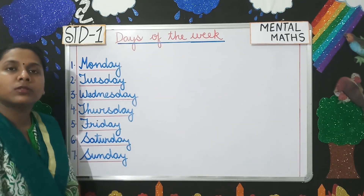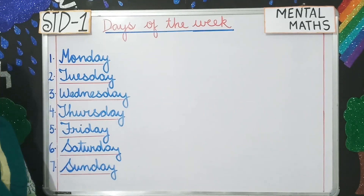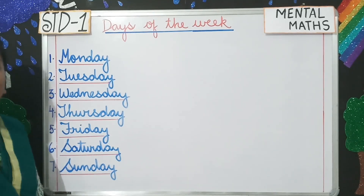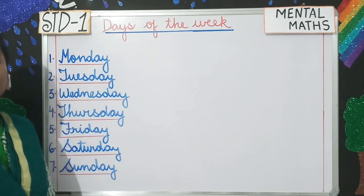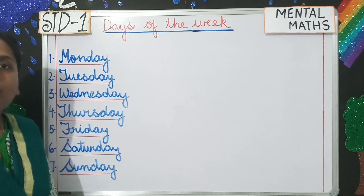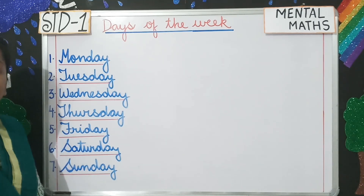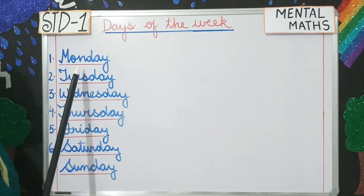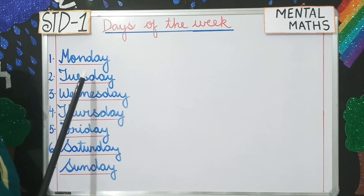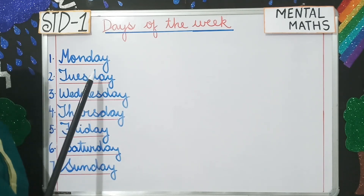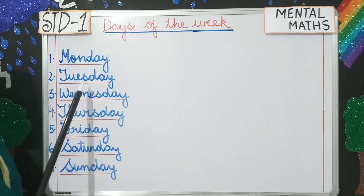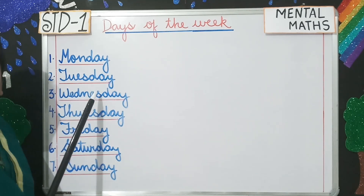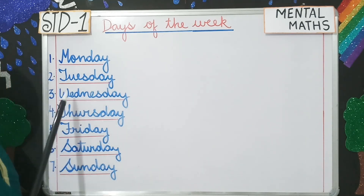First of all students, tell me how many days are there in a week? There are seven days in a week. The week starts with Monday, so Monday is the first day of the week. Then we have Tuesday. Tuesday is the second day of the week.